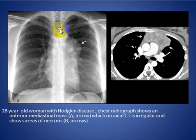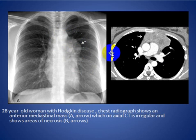Here is an anterior mediastinal mass silhouetting with the heart border and containing some necrosis — this is Hodgkin lymphoma.